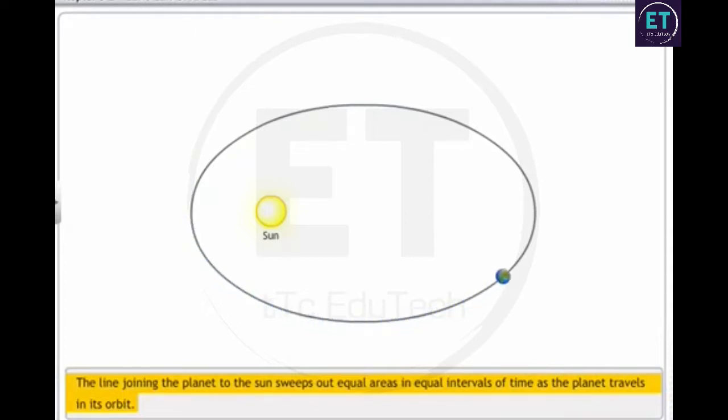Let's explain this through an example of earth's movements. Suppose the earth takes one month, that is 30 days, to travel from point P to Q on its orbit. Imaginary lines drawn from the sun to points P and Q, together with the earth's orbit,